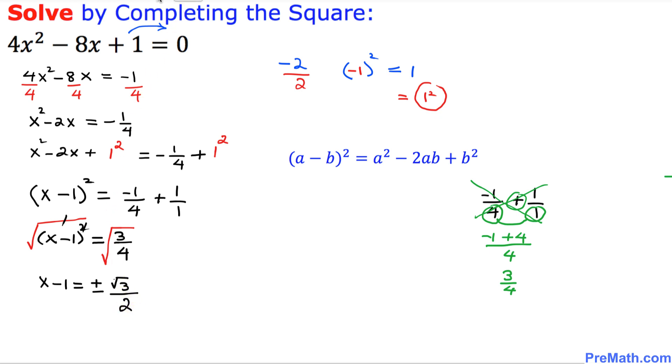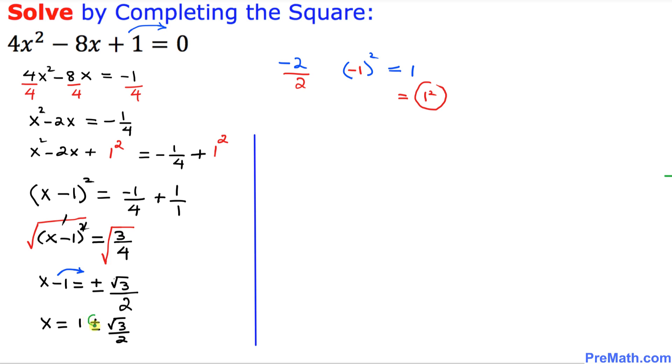So now I am going to move this negative 1 on the other side. So x is going to be equal to positive 1 positive or negative square root of 3 divided by 2. And now in the next step, we are going to split these numbers along with these positive and negative signs. So we are going to get one of the solution is going to become x equal to 1 plus square root of 3 divided by 2. The other solution is going to be 1 minus square root of 3 divided by 2.